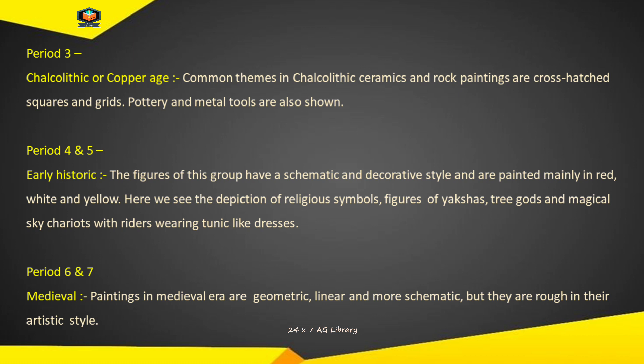Periods 4 and 5 — Early Historic: The figures of this group have a schematic and decorative style and are painted mainly in red, white and yellow. Here we see the depiction of religious symbols, figures of yakshas, tree gods, and magical sky chariots with riders wearing tunic-like dresses. Prarambhik Aitihasik: Is samooha ki aakritiyaon mein ek yojnaabaddh aur sajaavati shaili hai, aur inhe mukhya roop se laal, safed aur peele rang mein ranga gaya hai. Yahaan hum dhaarmik pratikon, yakshon ki aakritiyaan, vriksha devataon aur jaadui aakaash rathon ka chitrann dekhte hain, jisme sawaaon ne angarkha jaise kapde pahne hain.